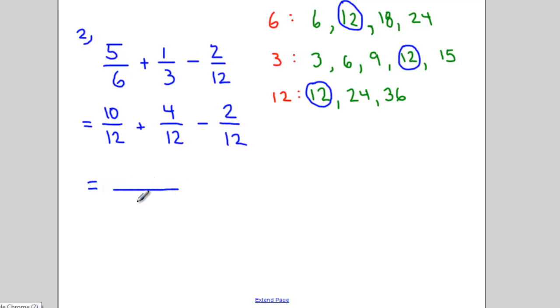So then when we're adding fractions and subtracting fractions, the denominator doesn't change. And we just add or subtract all the numerators from each other. So 10 plus 4 is 14. 14 take away 2 is 12.